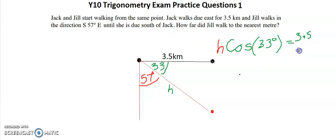All I need to do now is divide both sides by cosine 33 degrees. So that gives us 3.5 divided by cosine 33 degrees.